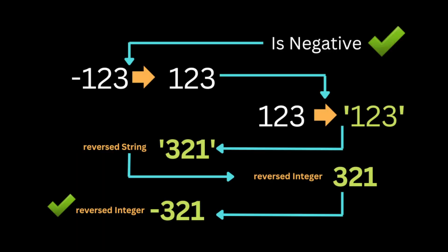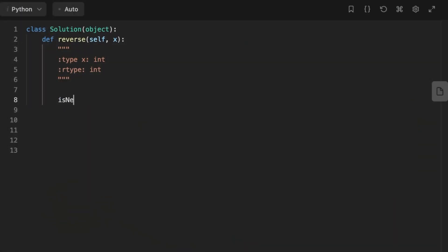But what if the input integer is negative? The first thing we're going to do is check if the input integer is negative. If true, we record that this integer was negative, then change it to be positive and repeat the same process as for a positive input. After that, we check if the status at the beginning was negative — if yes, we change the reversed integer to be negative and then return it.